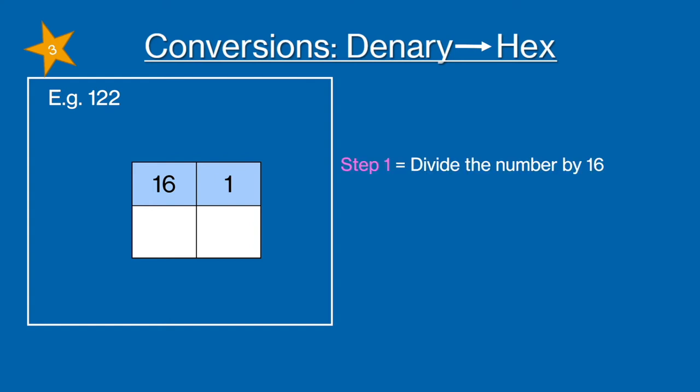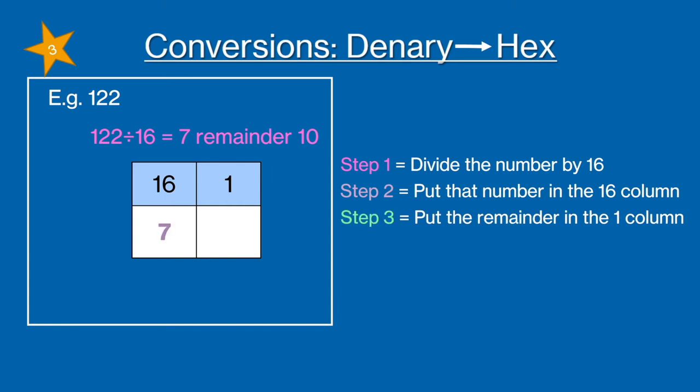So the first step is going to be to divide 122 by 16 which is 7 remainder 10. We're going to put that 7 into the 16 column. And then for step 3 we're going to put the remainder into the ones column. But as our number is 10 in hexadecimal that is an A, so we're going to put an A there instead. And your answer is 7A.